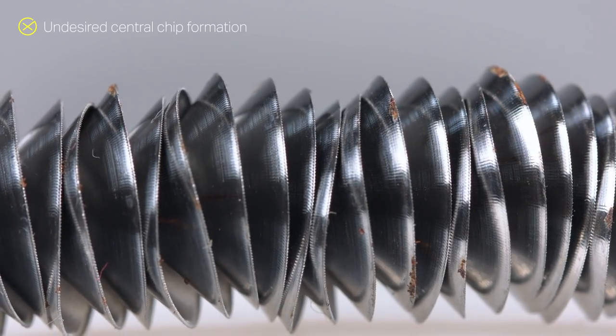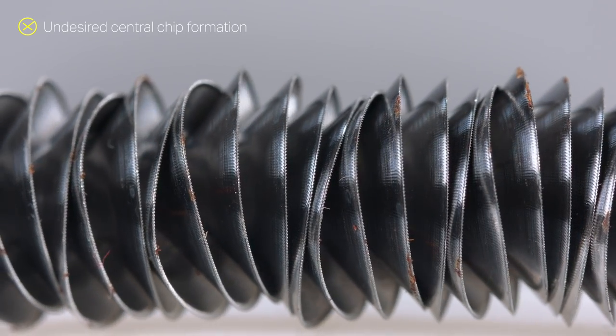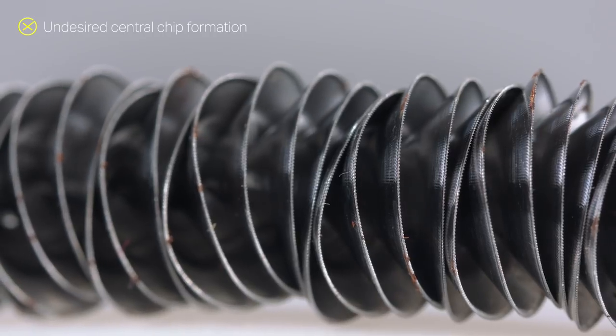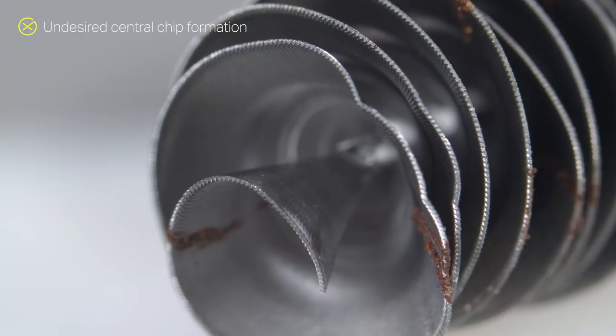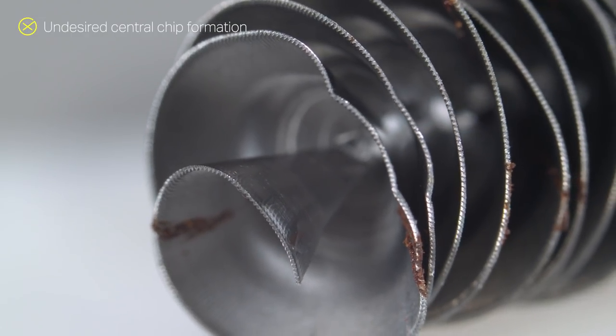Undesired chip formations may resemble crushed spirals that can create problems. Try adjusting the feed rate to produce either spirals or cones. This will promote better chip evacuation.